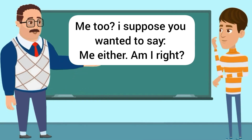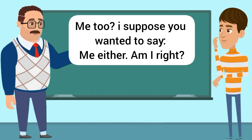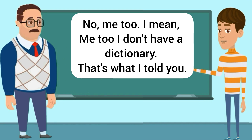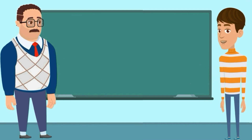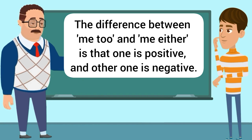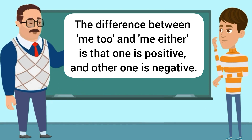Me too. I suppose you wanted to say 'me either.' Am I right? No, me too. I mean, me too — I don't have a dictionary. That's what I told you. Me too. The difference between 'me too' and 'me either' is that one is positive and the other one is negative.